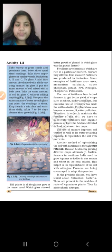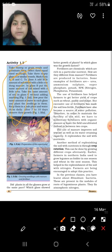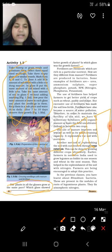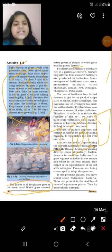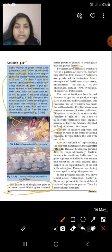That is Activity 1.2. Perform this activity and tell me the conclusion in the comment box. Did plants in all the glasses grow at the same pace? You have to answer all these questions in the comment box. Which glass showed better growth of plants? In which glass was the growth fastest? This is a type of activity in which you are having three glasses with you, and you have to put some seeds in it. The manure and fertilizers will be different, and you have to check which will grow faster. There will be three glasses.